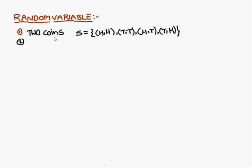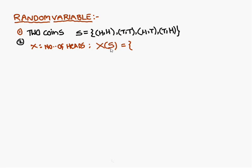So when two coins are tossed, the sample space consists of four elements. The first one is both are heads, the second pair is both are tails, the third one is head-tail and the fourth pair is tail-head. Now I am going to define x as the number of heads in the pair. So let us consider this sample space, x of s. x is a random variable and s is the sample space.